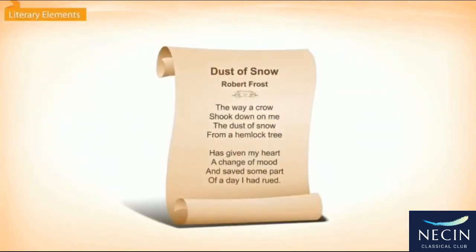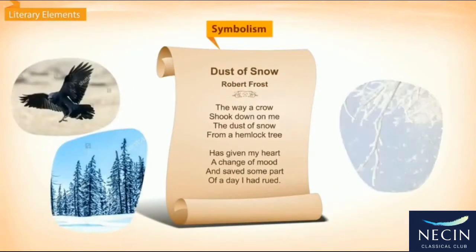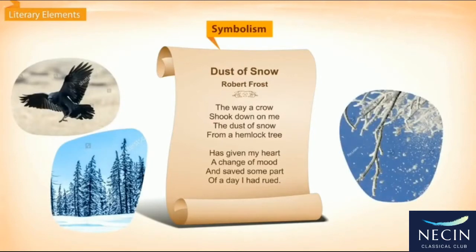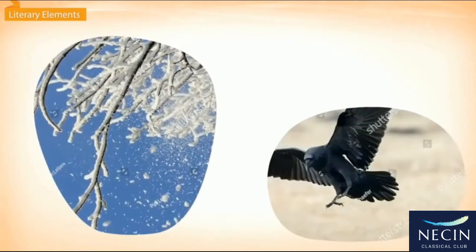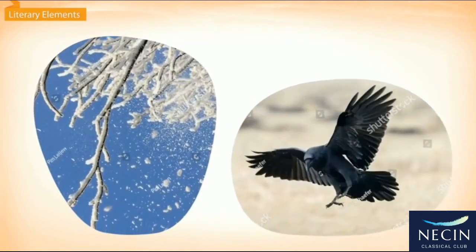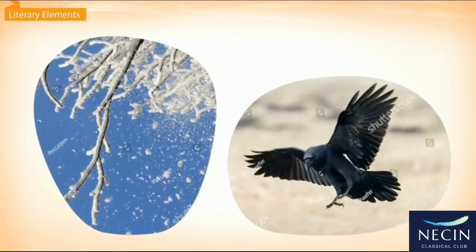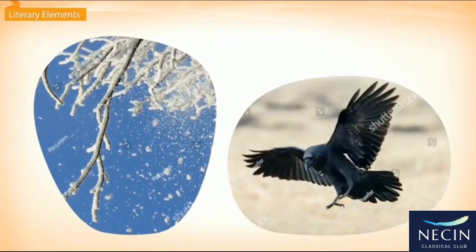Now let us look at the literary elements of the poem Dust of Snow. In the poem, Frost uses the crow, the hemlock tree and the dust of snow as symbols. Crow and hemlock usually signify something bad, but in the poem they bring joy to the poet and make him feel better. Frost uses simple imagery like a crow scattering snow from a hemlock tree and dust of snow falling on the poet to depict the positive effect of nature on the poet.